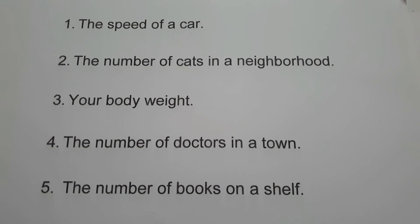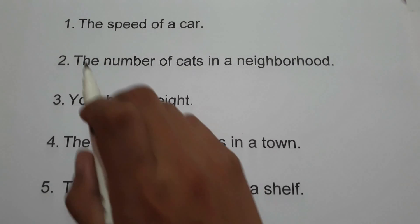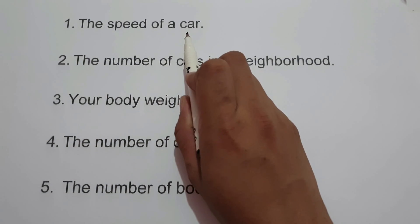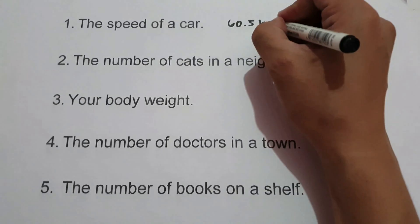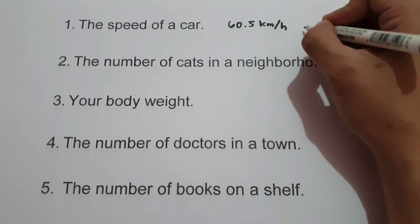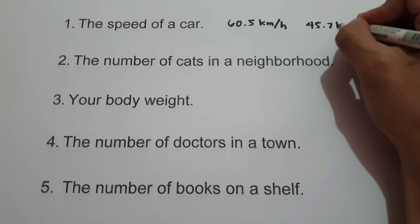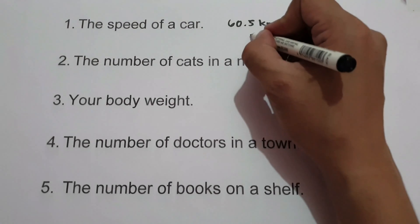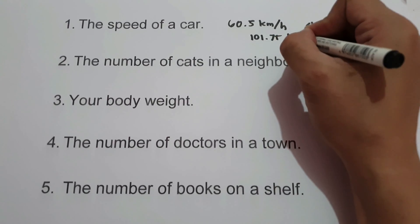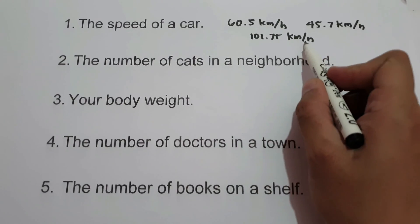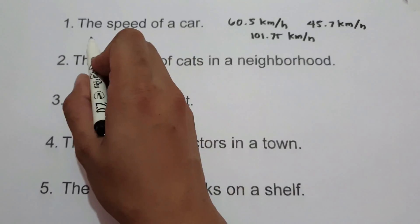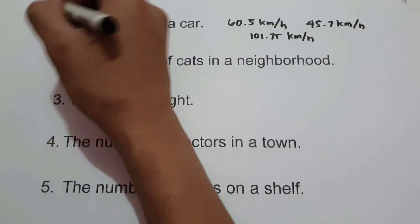In this set of examples, we are going to classify the following random variables as discrete or continuous. For number 1, the speed of a car — it can be 60.5 kilometers per hour, 45.7 kilometers per hour, or 101.75 kilometers per hour. This data can be measured. Therefore, the speed of a car is an example of continuous random variable.